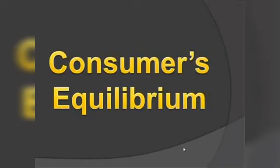The next concept is consumer equilibrium. When does consumer equilibrium occur? It occurs when, given their income and market prices, the consumer allocates their expenditure across all goods in a way that maximizes their satisfaction. There are two cases of consumer equilibrium.